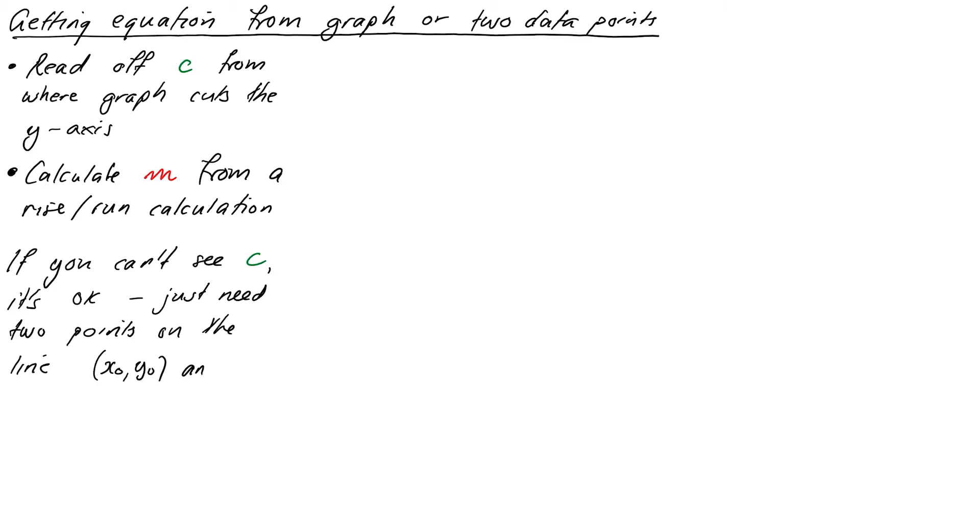All you need actually is two points on the graph and we can get the whole equation. We'll call these points x0, y0 and x1, y1. If you're reading these off a physical graph, it's smart to make them nice and far apart from each other to increase your accuracy. In this case, m will just be the rise over the run, which will be y1 minus y0 over x1 minus x0.